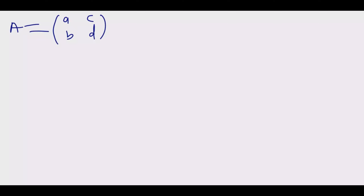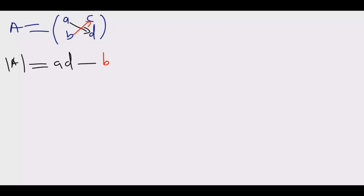When you are asked to find the determinant of A, you compute A times D minus B times C — that is AD minus BC. This is the determinant of a 2×2 matrix.